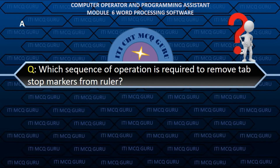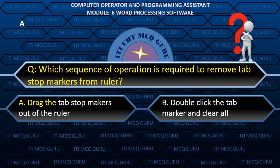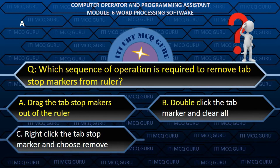Which sequence of operations is required to remove tab stop markers from the ruler? A. Drag the tab stop markers out of the ruler.